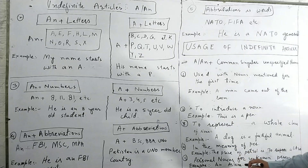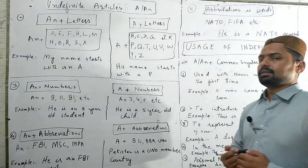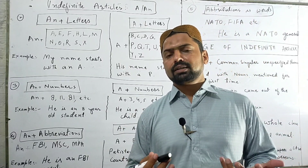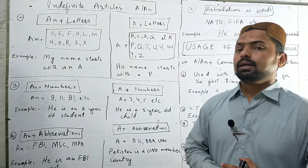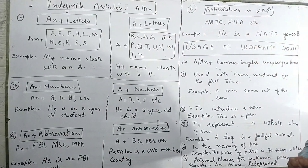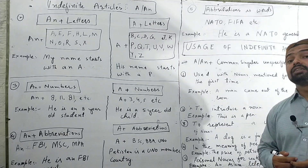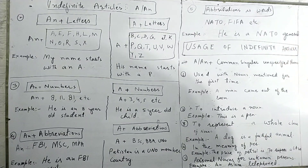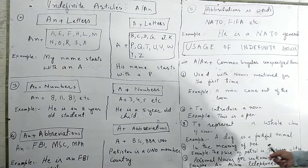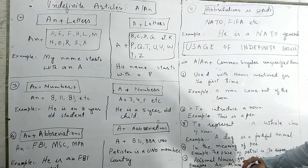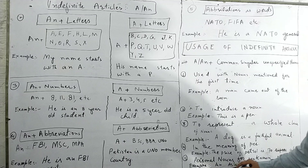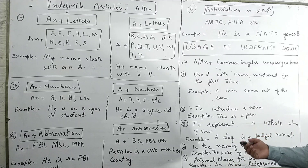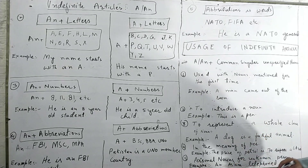Fifth use: indefinite articles are used with personal nouns for unknown persons. When referring to a person who is unknown to the listener, indefinite articles are usually used. For example: an unknown person telephoned — AN is used because the person is unknown.